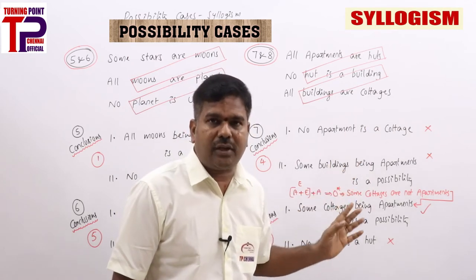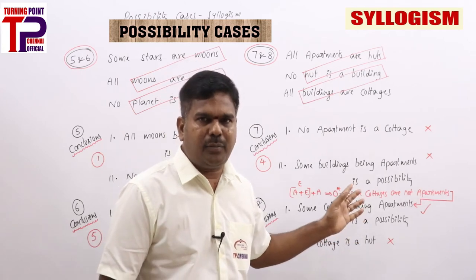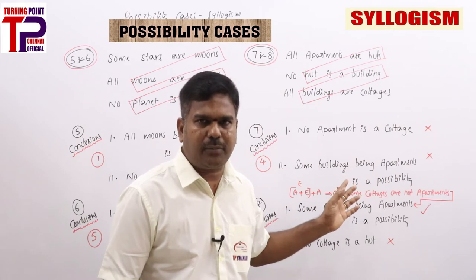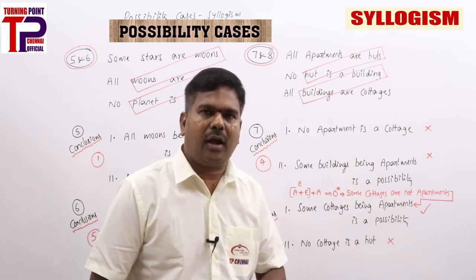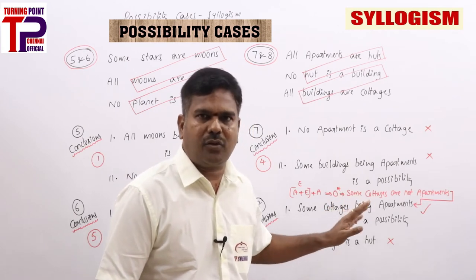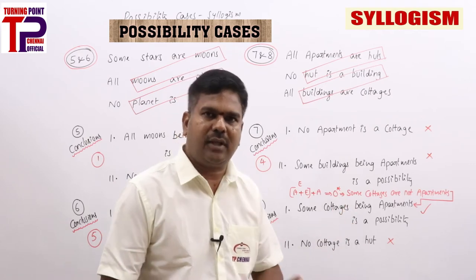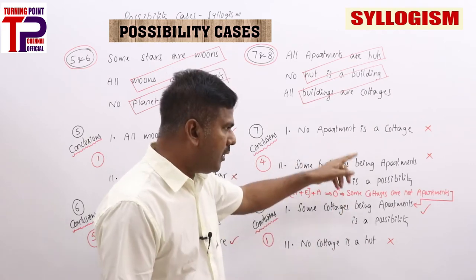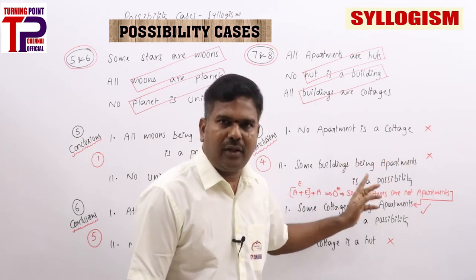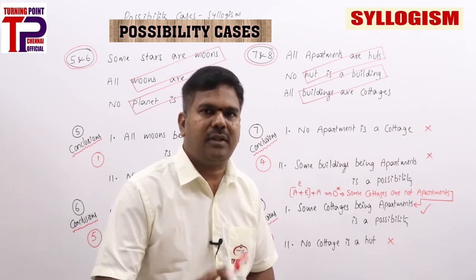Question 8, conclusion 1: 'some cottages being apartments is a possibility' — apartments and cottages, statements 1+2+3: A plus E plus A — A plus E is E, E plus A is O-star (O-reverse) — some cottages are not apartments. For O statement, except A-straight and O-straight, all others are possibilities. I-straight is given — yes, it follows.